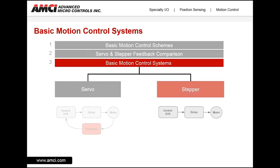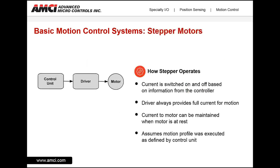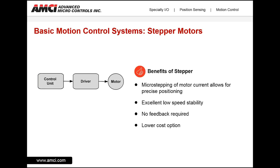Now let's take a look at a stepper. For a stepper system, current is switched on and off based on information from the controlling unit. The system runs as commanded with no adjustment based on any system feedback. Unlike a servo, the stepper drive outputs constant current through the move cycle. Because the stepper is a DC system, full current to the motor can be maintained at rest, eliminating the need for a holding brake. Benefits of a stepper system include: micro-stepping of the motor current allows for precise positioning, excellent low speed stability, and no feedback required, which provides a lower cost option compared to a servo.